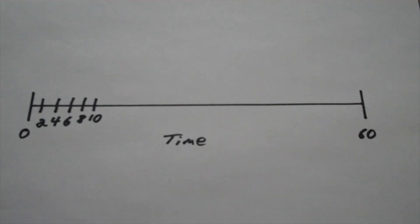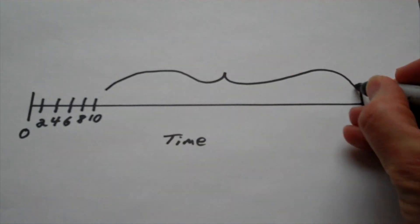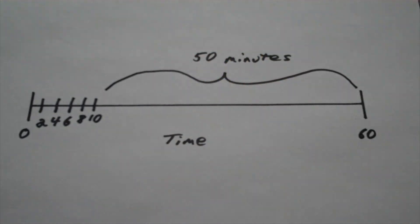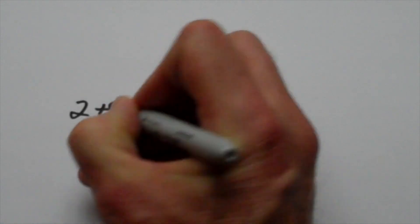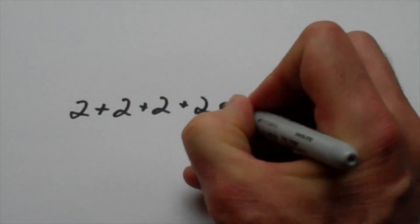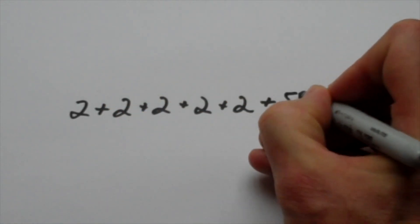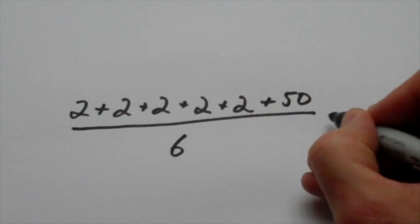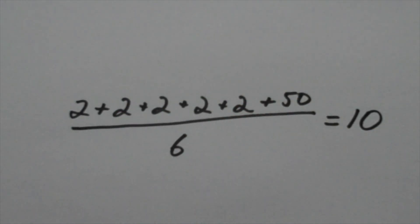This by default means that the waiting time for the sixth bus is fifty minutes. So given this scenario, where five buses come every two minutes, and one bus arrives fifty minutes after the fifth bus, the average arrival time is ten minutes.